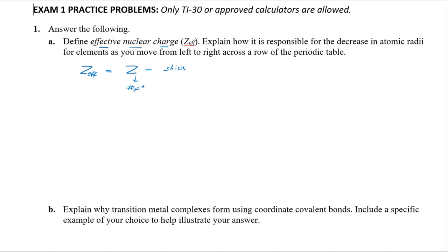The shielding is typically due to the core electrons. You've got a nucleus with a lot of positive charge, valence electrons out here, and core electrons in the middle. Those core electrons repel each other and repel the valence electron, effectively shielding it from the full positive charge of the nucleus. So what the valence electron actually feels is Z minus the shielding — that's the effective nuclear charge.